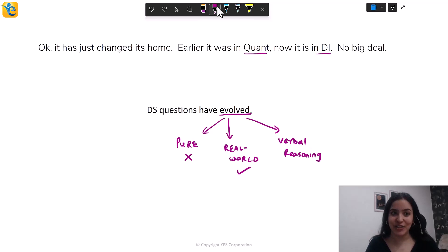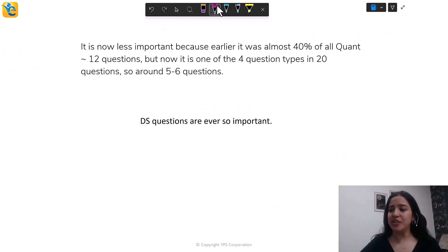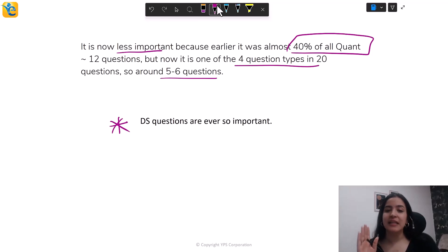Second, if you had this feeling that now this question type is less important, because earlier it used to be 40% of all Quant, about 12 questions earlier, but now it's just one out of four question types in the DI section, which has about 20 questions. So if you estimate it that way, you're like, okay, it has just five, six questions now, so less important. If this is what you feel, again, that's not true. Data sufficiency questions are really, really important. If you are chasing that 90th percentile, that 645 plus score in GMAT Focus Edition, then data sufficiency is important for you, even if the number of DS questions may have halved, but the importance stays as is.